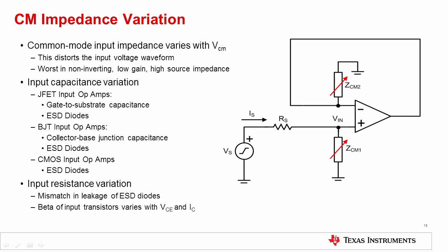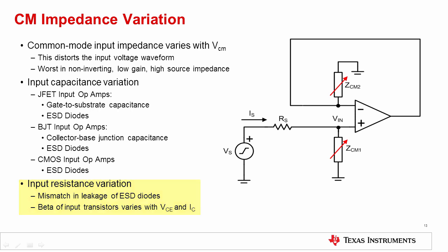However, even if the op amp doesn't have a gate-to-substrate capacitance, there are still the reverse-biased ESD diodes whose capacitance changes with common mode voltage. With BJT op amps, the main offender is the collector-to-base junction of the device. BJT devices also have ESD diodes, and on CMOS devices, this effect is entirely from the ESD diodes. On CMOS op amps, the input structures are inherently more susceptible to ESD; therefore, the ESD diodes are normally larger and this effect can be greater. There is also the effect of input resistance variation, not just input capacitance variation. On bipolar amplifiers, the beta of the input transistors is not constant — beta varies with changing collector-to-emitter voltage and collector current. As the common mode voltage changes, the collector-to-emitter voltage and collector current will change, and the beta will be modulated, causing variations in bias current which is effectively a variation in the input resistance of the op amp.